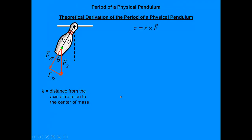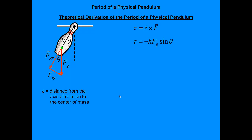Torque is r cross F, or r·F·sine(theta). The force is gravity, and r is the distance from the axis of rotation to the center of gravity — which is the center of mass — so that distance is h. I made this negative because when the angular position is out to one side, the torque acts back toward the equilibrium position. It is a restoring torque, so torque is opposite to the angular position. With F_g equal to mg, we get torque equals negative mg·h·sine(theta). Note that F_g·sine(theta) is really just the tangential component of gravity, F_gt.